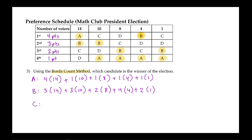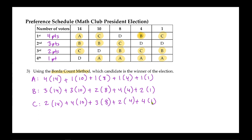For Cora, in the first pile she was ranked third with 14 ballots — two points times 14. In the next pile she was ranked number one, so she gets four points times 10. Then she was ranked second in the next pile — three points times eight. In the following pile she was ranked third — two points times four. And finally, in the last pile she received one first place vote — four points times one.